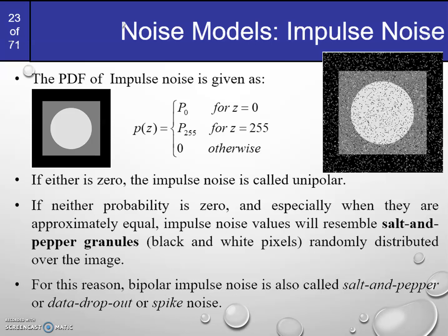This is the sixth and last noise model we'll be studying, which is called impulse noise — also called salt and pepper noise. It's called salt and pepper noise because if you take an original image and add impulse noise to it, it looks like there are a lot of pepper and salt granules scattered over it.